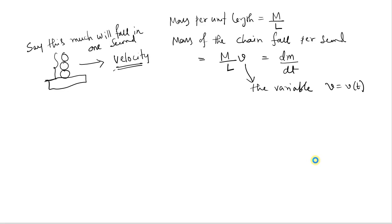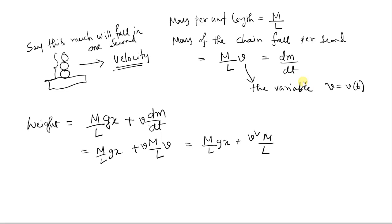So then your weight will be - your first component was M by L times gx, and the second component is v times dm/dt. We already know what dm/dt is: M by L times v. There is another v there, so this will be M by L times gx plus v squared M by L.